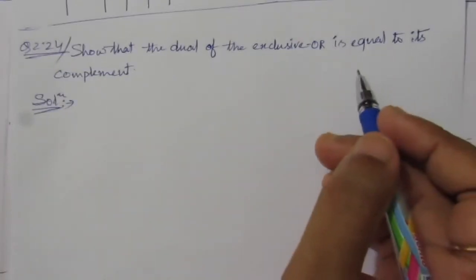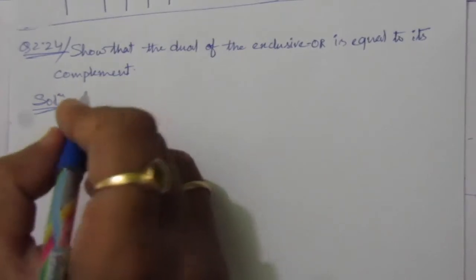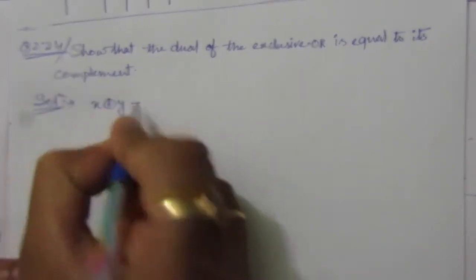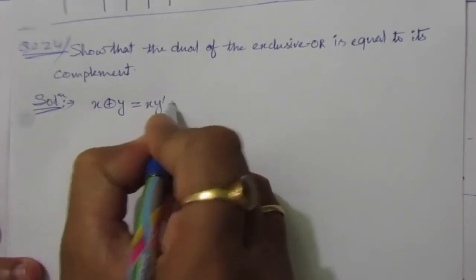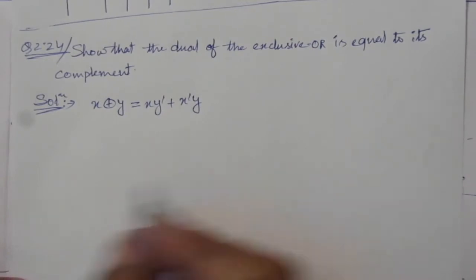Exclusive OR we can write as, if x and y are the input, then x exclusive OR y equals x y bar plus x bar y. So this is the exclusive OR gate.